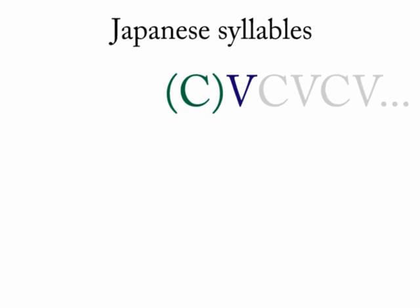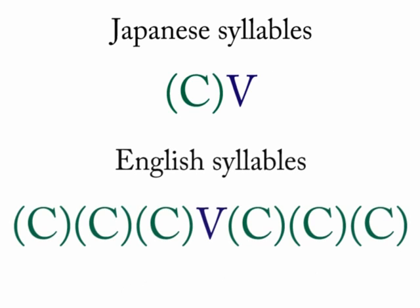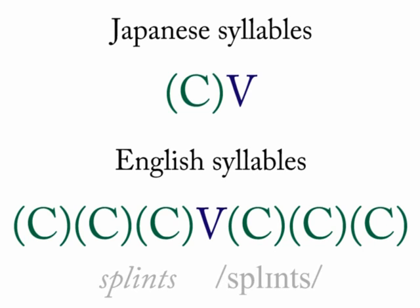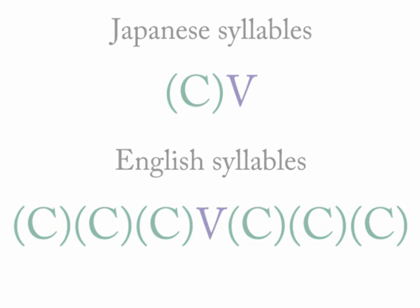In English, however, we can have open syllables just like Japanese, but we also find fairly overloaded syllables that involve three consonants before and three consonants after the vowel nucleus. In all cases, you can still use the concepts of syllable onset, syllable nucleus, and coda to analyze syllables in a language.